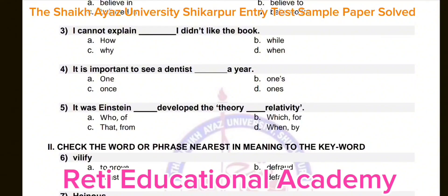Question number five: It was Einstein dash developed the theory dash relativity. Options: A) who, of; B) which, for; C) that, from; D) when, by. The correct answer is A — it was Einstein who developed the theory of relativity.